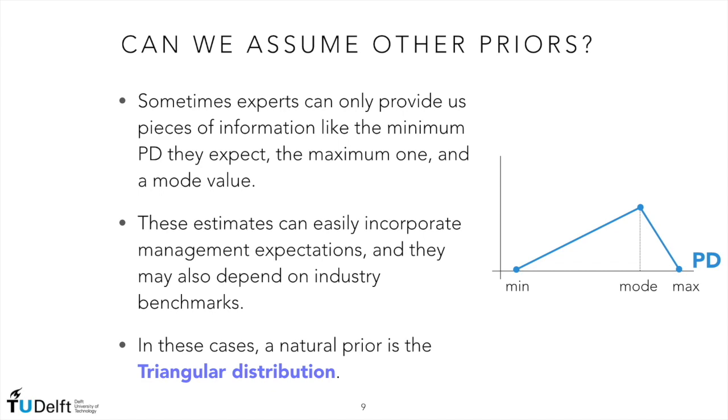There are situations in which economists or financial experts may have an idea about the behavior of the probability of default based on a theoretical model or industrial benchmarks. Very often they may have an idea about an upper bound, a lower bound, and also what may happen roughly in between — typically a mode value, a value which is most frequent. This information can be easily embedded into another type of prior: the triangular distribution, a very simple distribution that can be seen as the sum of two uniforms. Nevertheless, this is just another possible prior — we may think of an infinity of distributions, and the results will change accordingly.